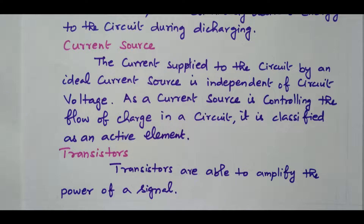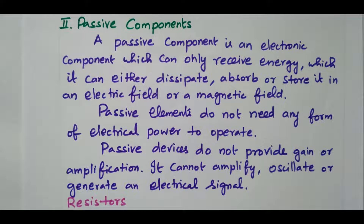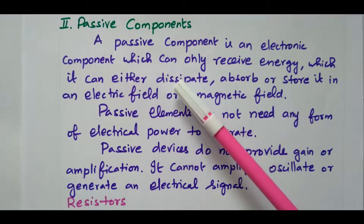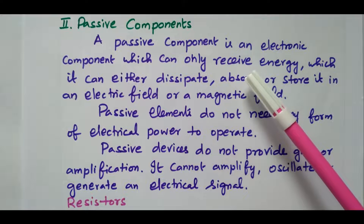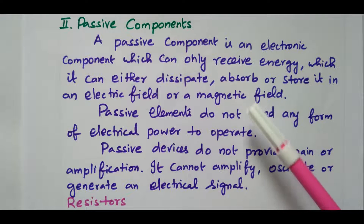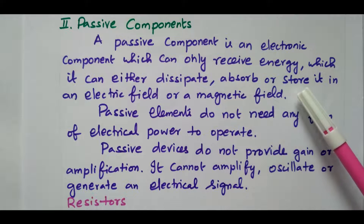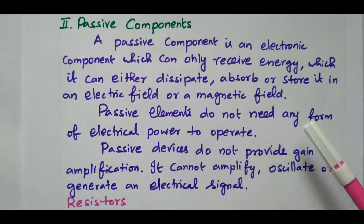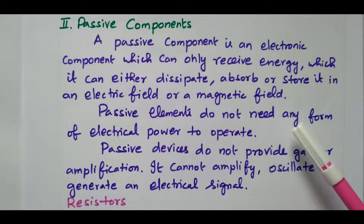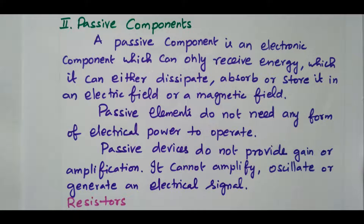Now we will see the passive elements. A passive component is an electronic component which can only receive energy. While an active component delivers energy, a passive component can either dissipate, absorb, or store energy in the electric field or magnetic field. So the passive component will receive the energy — that energy can be dissipated, absorbed, or stored in the form of either an electric field or magnetic field. In contrast to active components which deliver energy, passive components receive energy.